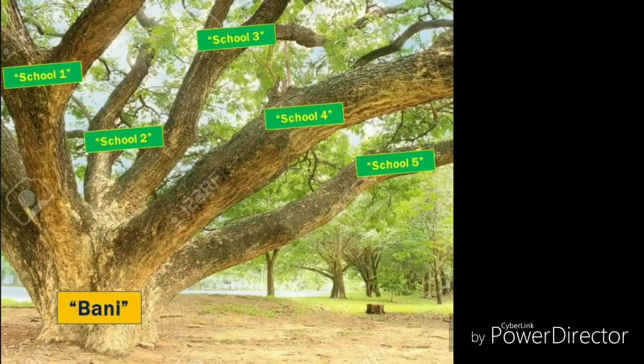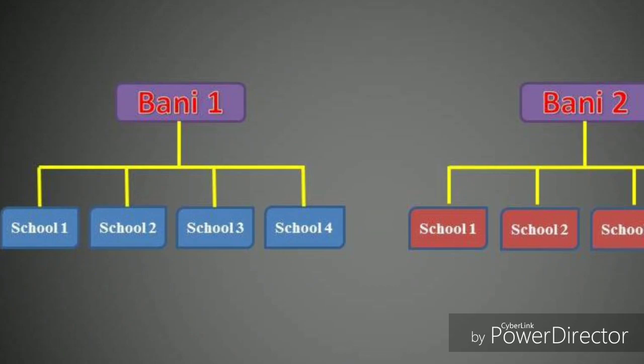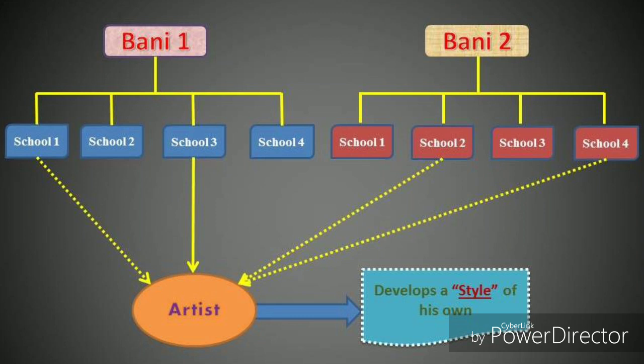A Bani can be considered as a big tree with multiple branches. The tree as a whole can be considered as a Bani, whereas the multiple branches can be multiple schools. This means there can be multiple schools under a particular Bani. What is a style then? If someone following a particular school adapts certain characteristics or features of another school or Bani and then develops his own method of playing, it can be a style.